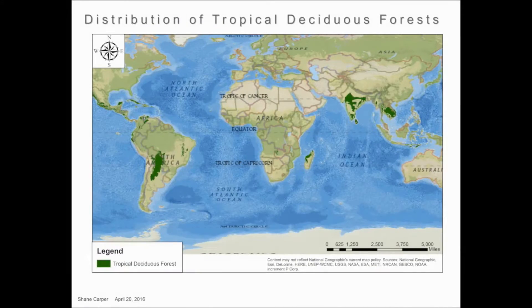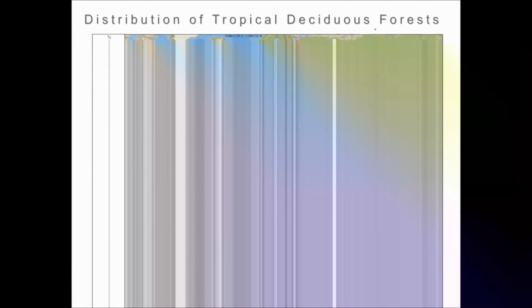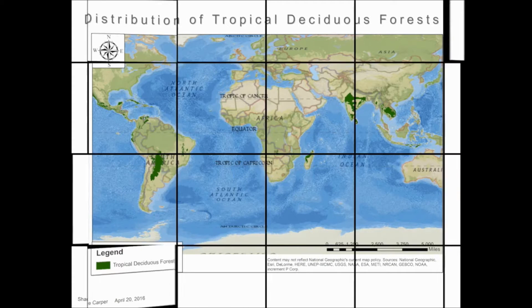Tropical deciduous forests, also known as monsoonal forests, are found in a belt along the equator between the tropics of Cancer and Capricorn, as well as the humid subtropics. They are also found in parts of Africa, India, South America, Central America, and small islands in the Pacific.